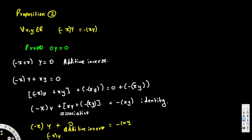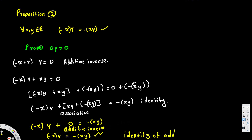So negative x times y equals negative xy — that is what we wanted to prove, and we've proved it right here. The final step uses the identity of addition: adding zero to anything leaves it unchanged, so the zero is eliminated. That's it for this video. If you're trying to learn discrete mathematics, there are a bunch of videos in my playlist — I hope you watch those too. Don't forget to subscribe, see you next time!